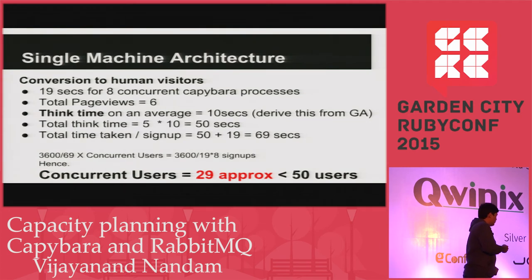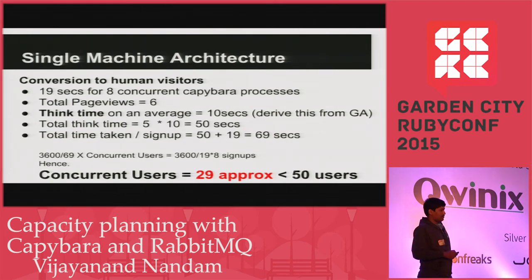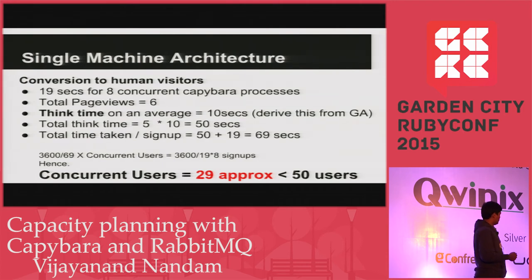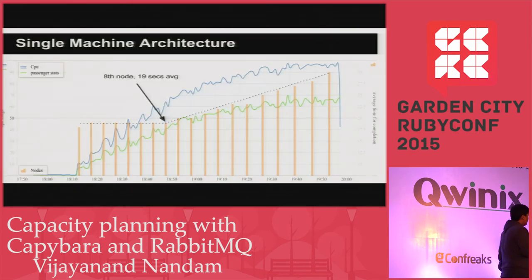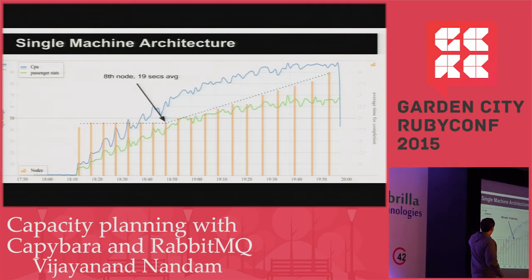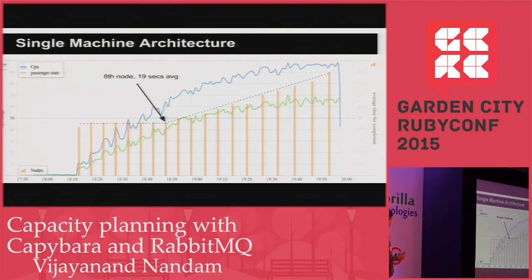Converting this to per hour, the architecture can support around 29 concurrent users signing up at the same time. Our goal is 50 users, so we haven't reached it. Looking at the graph, the green line — Passenger CPU usage — is taking the highest load. So we're going to scale the Passenger service in the next architecture.